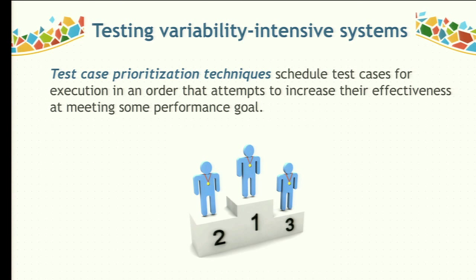Another kind of testing technique for variability-intensive systems is test case prioritization, which schedules test cases for execution in an order that attempts to increase their effectiveness and meet some performance goal. For example, a tester may wish to order test cases to increase the rate of fault detection. Given a goal, you can define different prioritization criteria, such as ordering based on previous execution results or the propensity to faults of components.